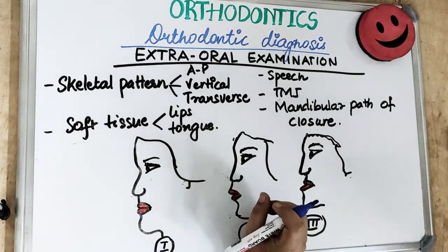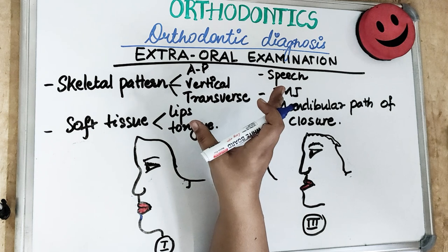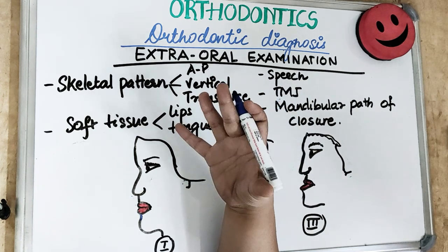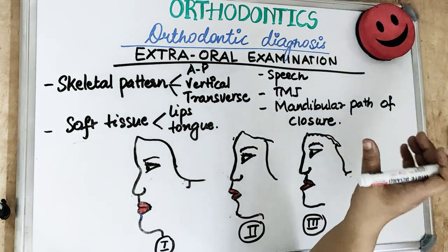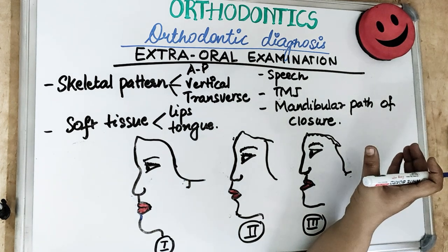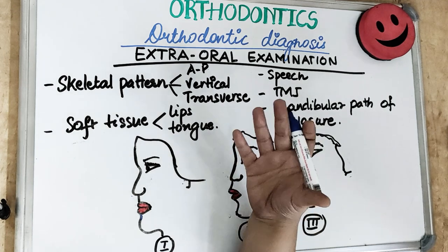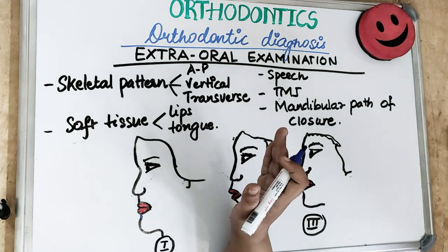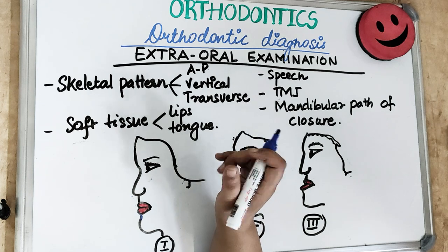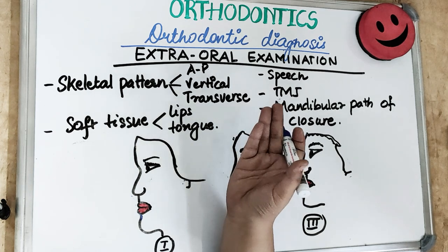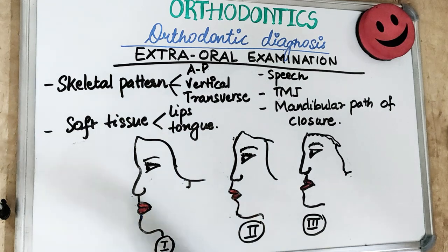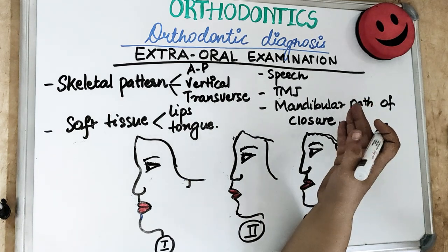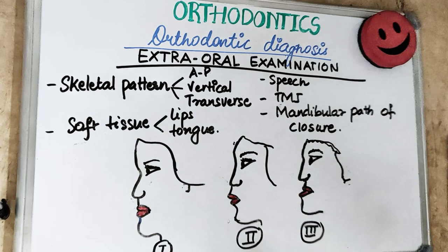Certain malocclusions cause speech defects due to interference by the tongue or lips. This should be observed while asking general questions during case history — focus on the patient's speech. If a patient has a tongue thrust habit, speech will present as a lisp. If the patient is a cleft patient, sound will come from the nose, giving a nasal tone. Speech examination should be conducted during the general questioning.